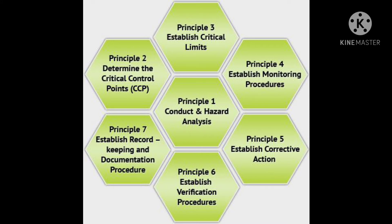The first principle is to conduct a hazard analysis — listing the steps in the process and identifying significant hazards. The second principle is to identify critical control points, which is a point, step, or procedure at which control can be applied and a food safety hazard can be prevented or eliminated to an acceptable limit.